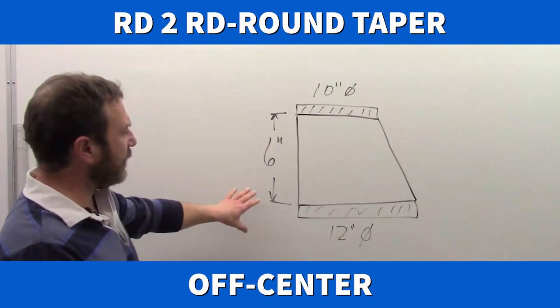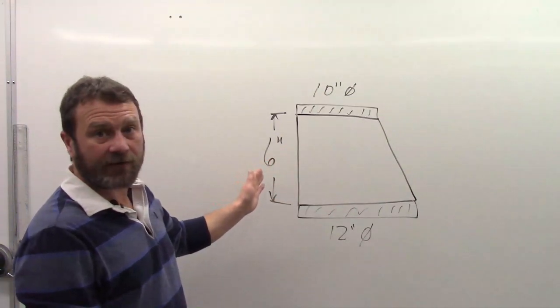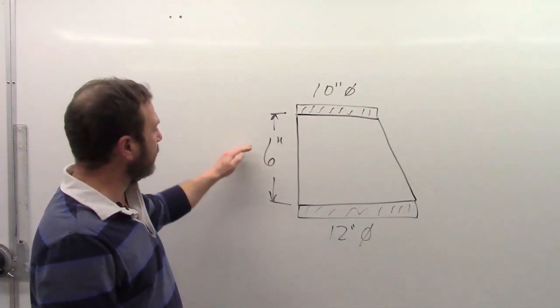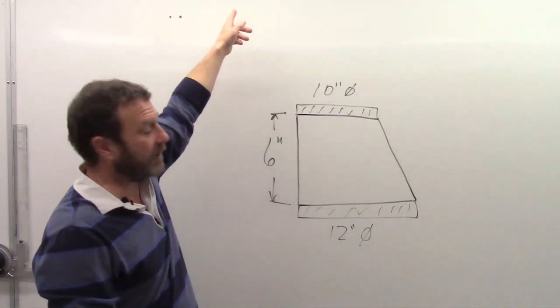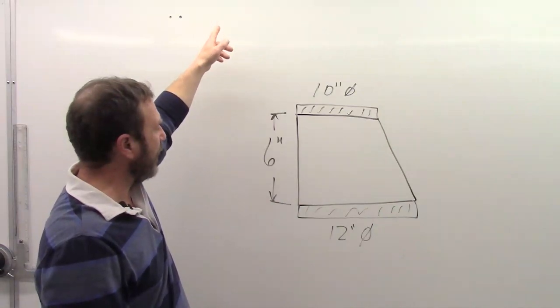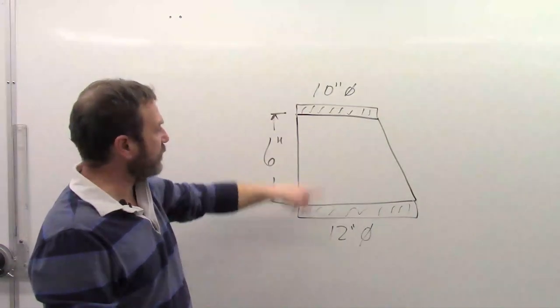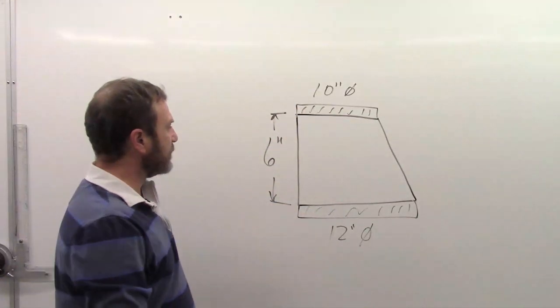Now this one, it's off-center, so that's one of our indicators we can't use radial line. But again, if we looked at where the apex point may be, it's going to be a really far way away because of the small change in size.